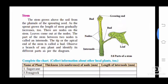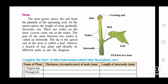Now let's move toward the stem. The stem grows above the soil from the plumule of the sprouting seed. As the sprout grows, the length of the stem gradually increases. There are nodes on the stem where leaves come out. The part of the stem between two nodes is called an internode. You can observe the parts of the stem in figure 2.6.